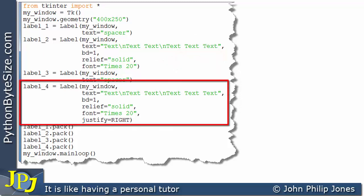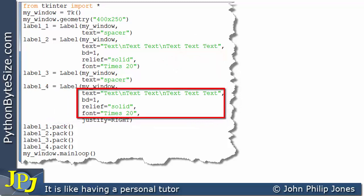If you look at label 4, you can see that these four lines of text are identical. The difference is here you can see I've made justify assigned RIGHT. Note RIGHT is uppercase, all capitals.